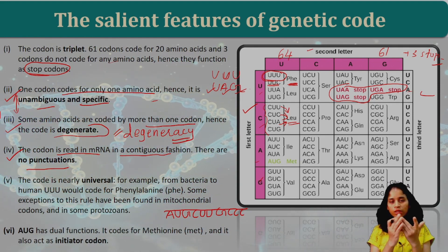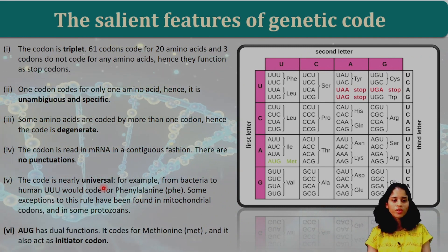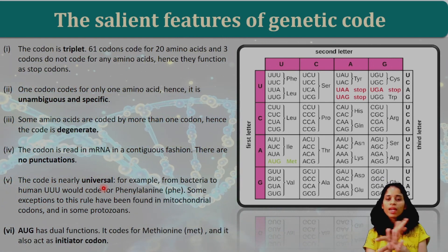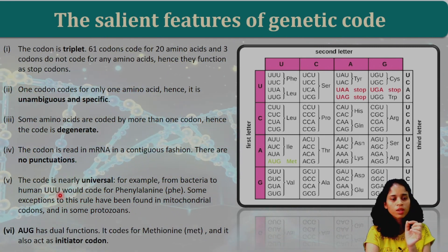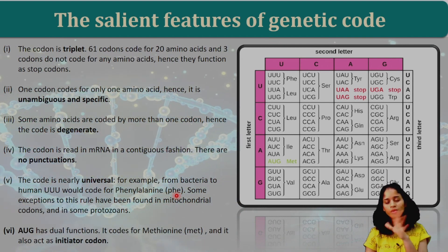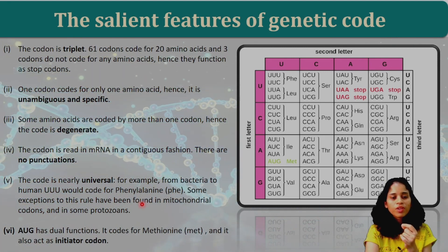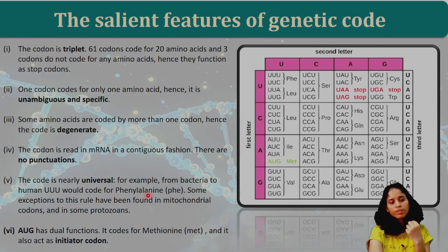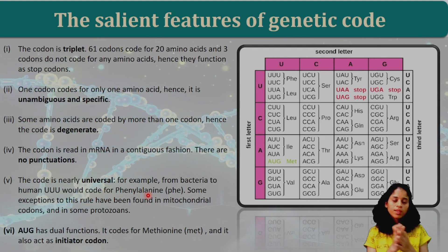The genetic code is nearly universal. From bacteria to human beings, in all organisms, the genetic code is the same — the same codon codes for the same amino acid. For example, UUU codes for phenylalanine in bacteria and in any organism. Some exceptions to this rule have been found in mitochondrial codons and some protozoans, but overall the genetic code is universal.